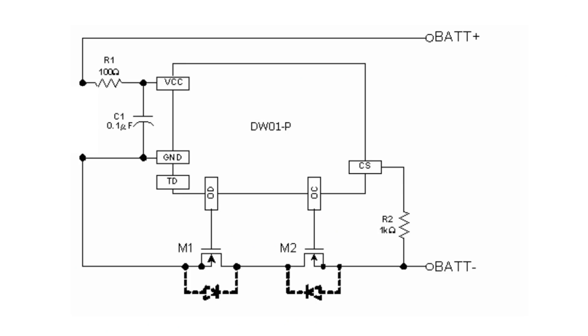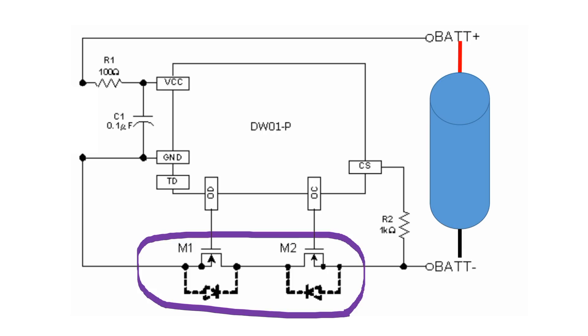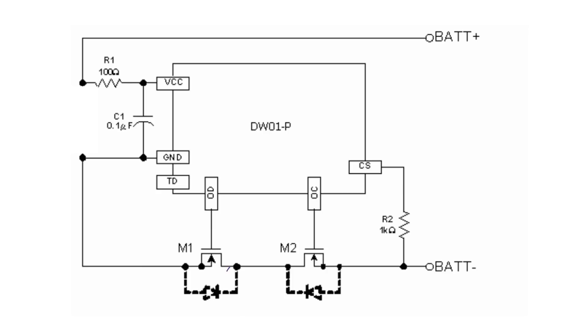We have to connect two MOSFETs to our DW01, like that the LiPo cell is connected here. At the end, this is the positive pole of our protected battery, and this is the negative one, where we connect the load. How does this circuit work? The left MOSFET is on as long as the OD signal allows to discharge the battery, and the current can flow from the cell to the load through the body diode of the right MOSFET. The same applies with the right MOSFET, which is responsible for the charging control.